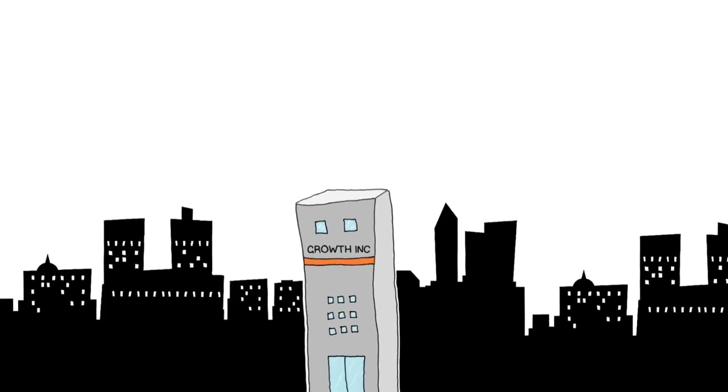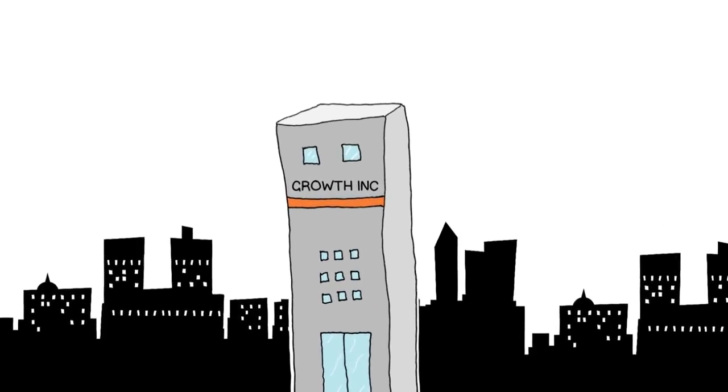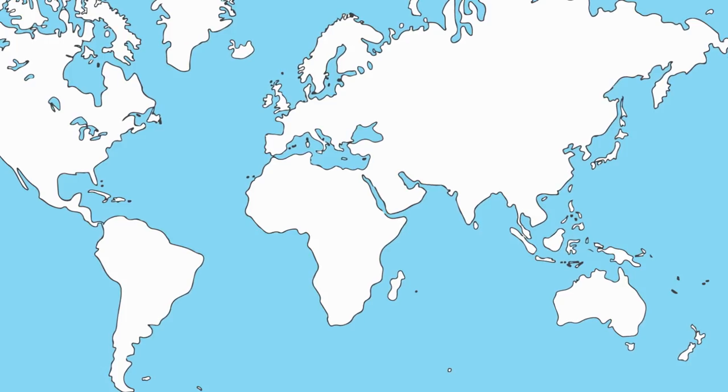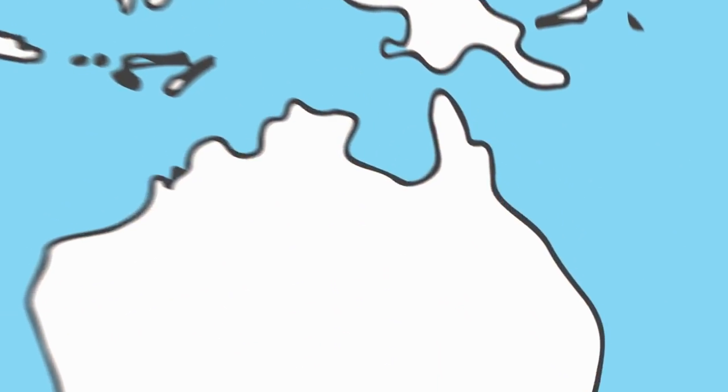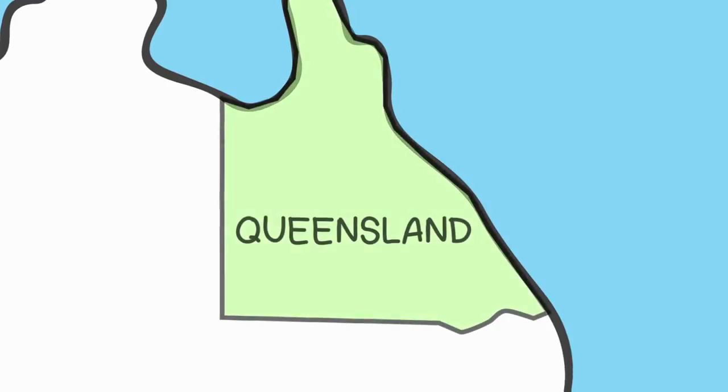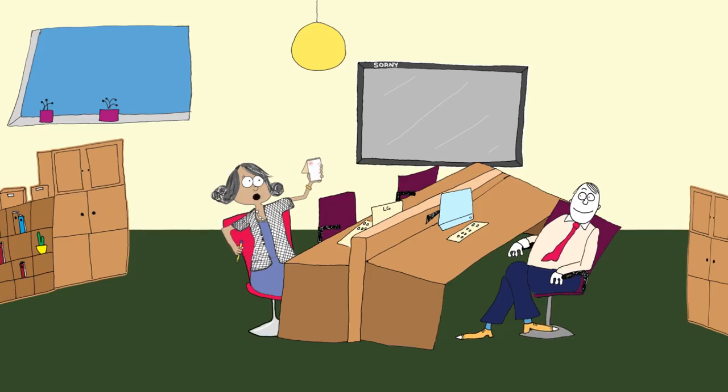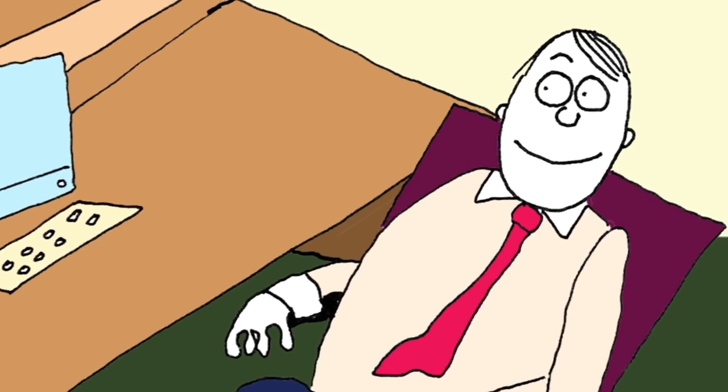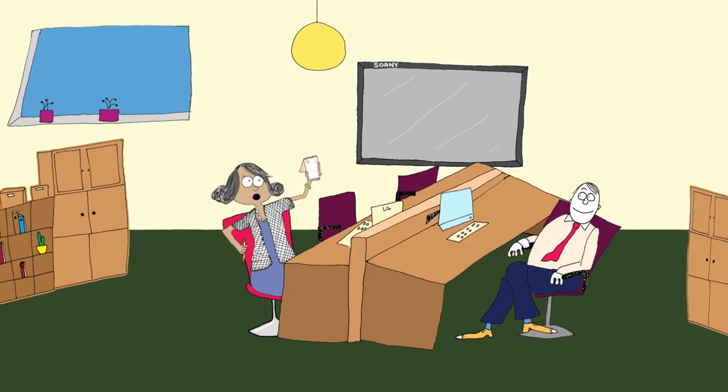And what about firms that do grow? What can we learn from them? In our quest for answers, we interviewed high-growth businesses in Queensland, Australia. We asked them about their business models, how they use technology in their business, and about the role of government support in their growth. This is what we found.